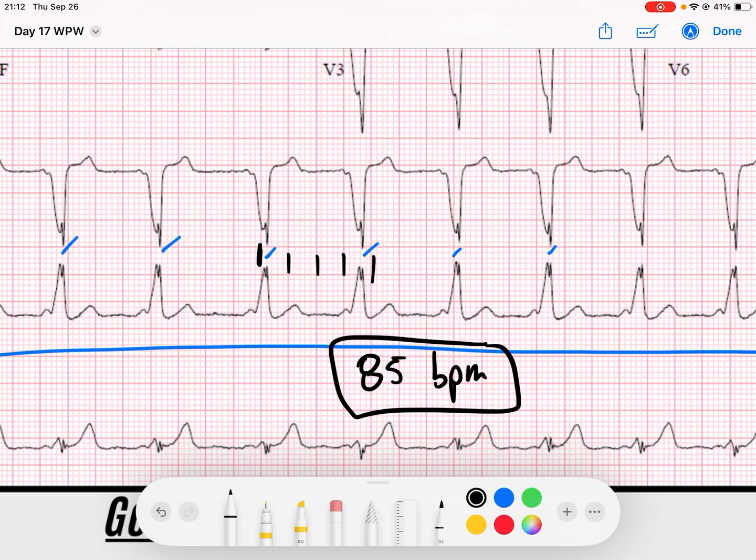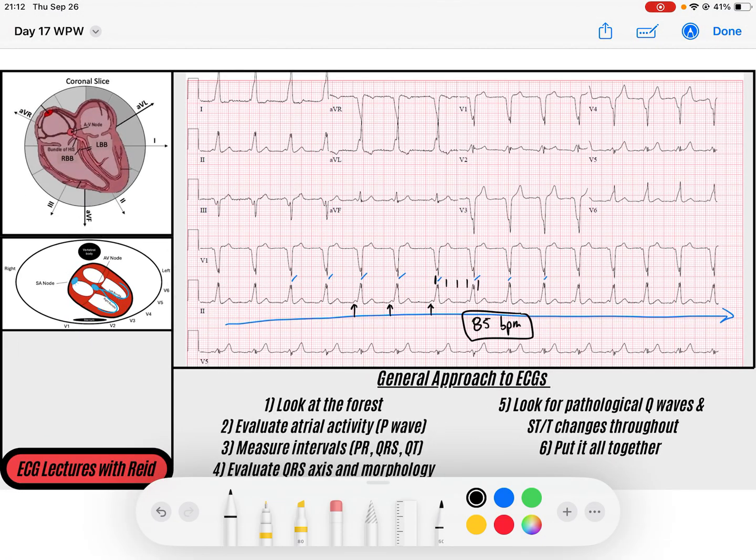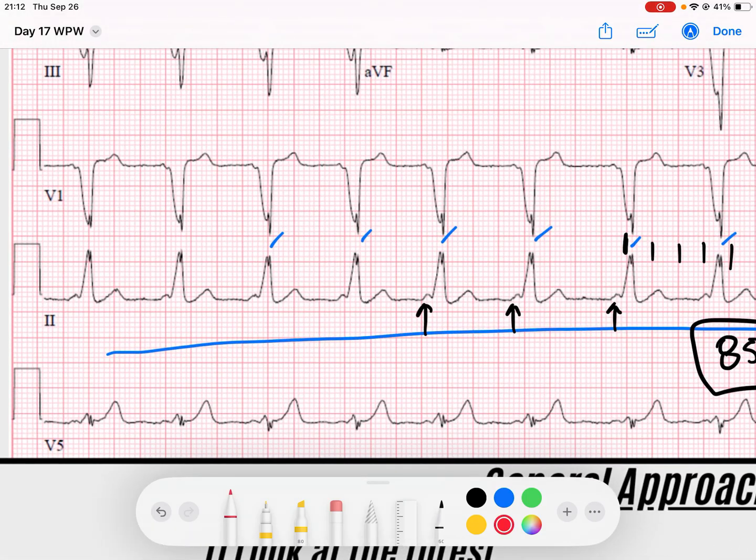I noticed that there are P waves in front of my QRS complexes. So this rhythm seems to be driven by some type of atrial activity. But my QRS is wide. I do look at my QRS complex and I see that I've got a wide QRS. My QRS complex is greater than 120 milliseconds.